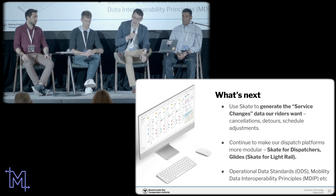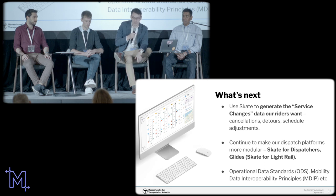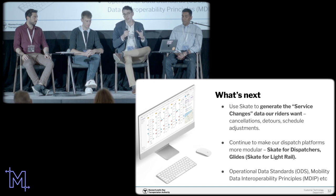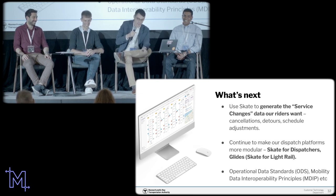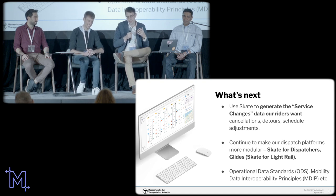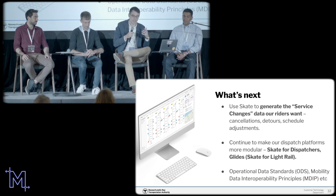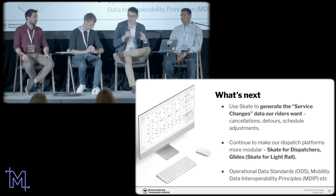What's next for us? Right now Skate is still a read-only tool, but this year we're going to open the Pandora's box of using Skate to generate service changes data — information about interventions we're making in service. We're also expanding Skate from a field officials tool to include back-office dispatchers, and building a version for light rail called Glides. And this is a great way to engage with topics from this week like the mobility data interoperability principles and operational data standards — thinking about how internal operations data gets communicated across systems and rethought for use by riders via consumer apps.